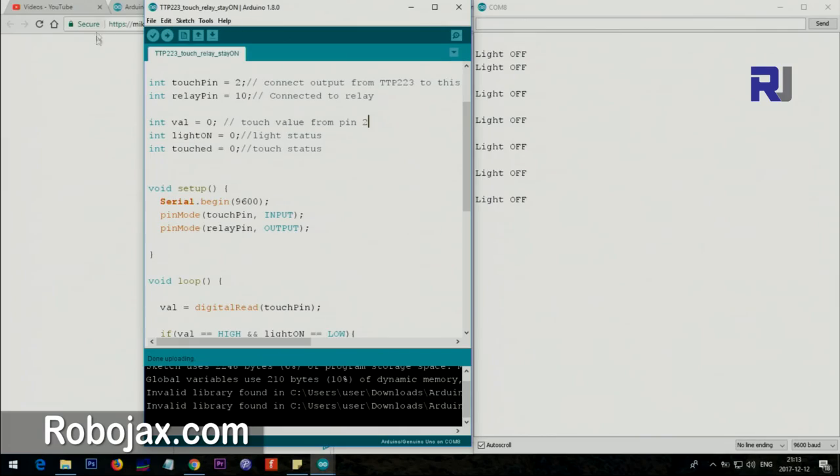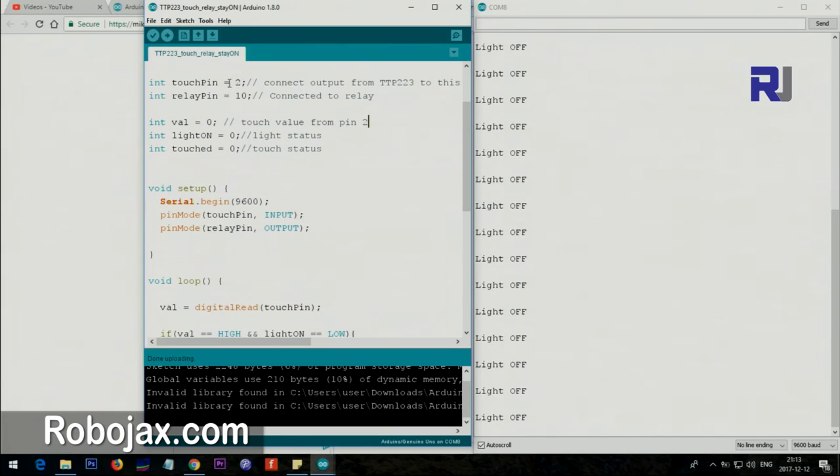So here is the code. Pin 2 is defined as an input pin for the touch panel, and then relay is connected to pin 10. These two you can change accordingly if you are connecting it to a different pin.